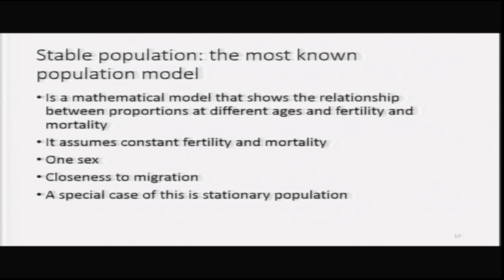One of the most well-known population models is the stable population model. It is a mathematical model that shows the relationship between proportions at different ages and fertility and mortality rates. The stable population model assumes constant fertility and mortality; it is a one-sex model. The model is closed to migration, meaning there is no in-migration or out-migration in the population being modeled.